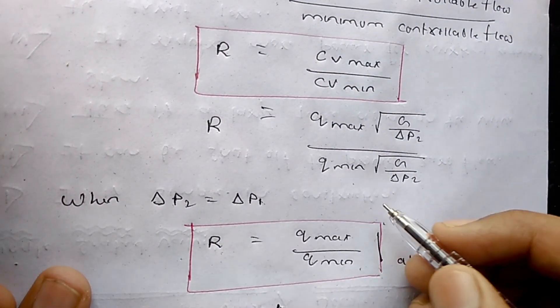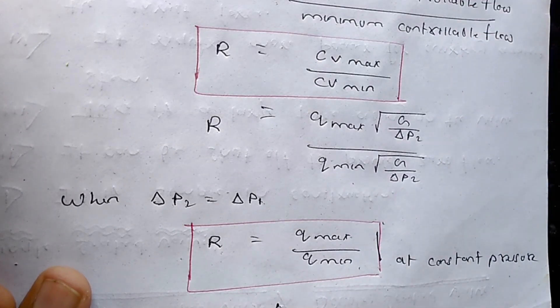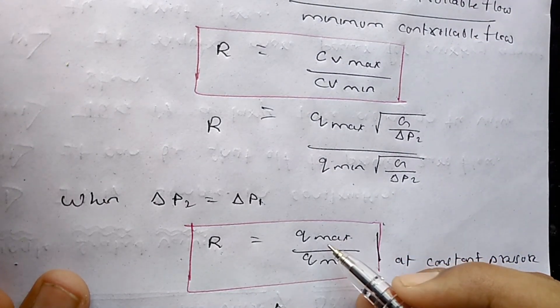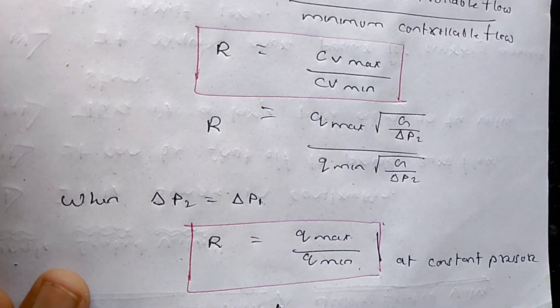So that's why rangeability is similar to turndown. That is the ratio of Qmax by Qmin at constant pressure.